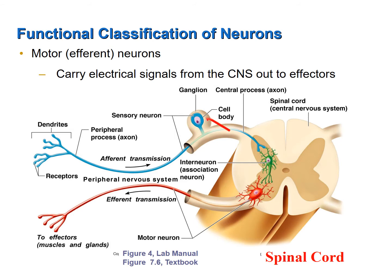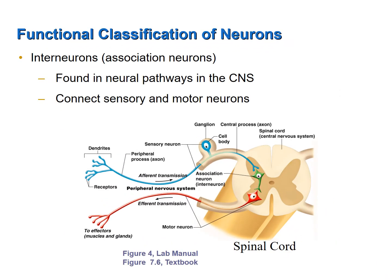Motor neurons, which are found in the central nervous system, send electrical signals away from the central nervous system, out to effectors. These are motor or efferent neurons. Interneurons, shown here in green, connect the sensory and motor neurons. Interneuron or association neurons send nerve impulses within the central nervous system.